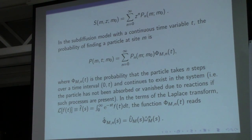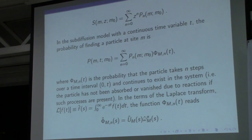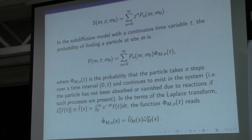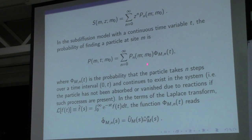What does this mean? In this model — the first model — we involve the chemical reactions into the function φ. The difference equation is standard for the normal random walk, but reactions will be involved in this function.